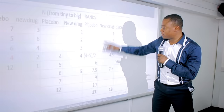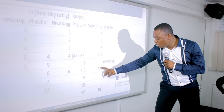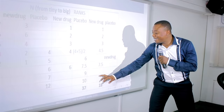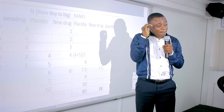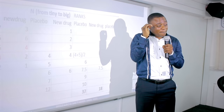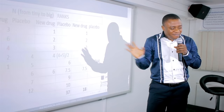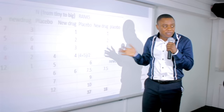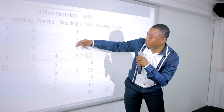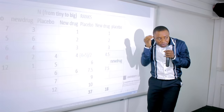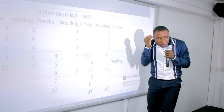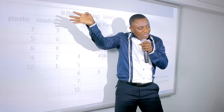As you rank and move down the list, push values to the appropriate group column. There is no hard-and-fast rule about how you physically arrange them on paper — what matters is that you can track which rank belongs to which group. The key is consistency; as long as you can follow what is happening, the layout is flexible.